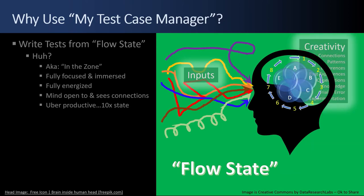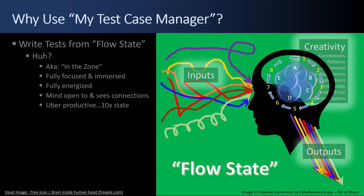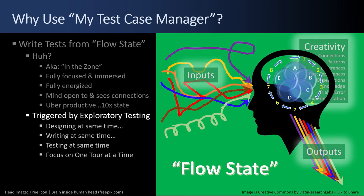Because you're not distracted, a higher percentage of your concentration is going to creativity — identifying connections, identifying patterns, noticing differences, applying past experiences, making observations, applying past knowledge, doing trial and error, doing experimentation. You're highly focused and not distracted, and that yields nice, clean outputs — all aligned, simplified, refined down to the most important, highest priority, simplest execution paths. How you trigger flow state is by using exploratory testing: you're designing at the same time as you're writing, at the same time as you're testing, focused on one tour at a time, working your way through the app with eyes wide open, deep concentration, grinding through the test cases, then putting on a different tour hat and proceeding back through the app again.